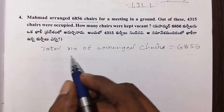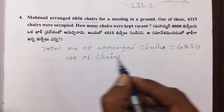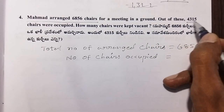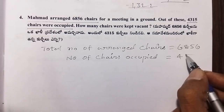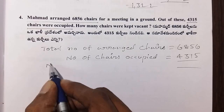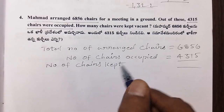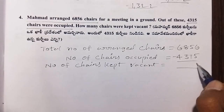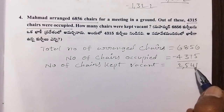The number of chairs kept vacant is to be found. The total chairs arranged were 6,856, occupied chairs were 4,350, so the number of vacant chairs is 2,506.